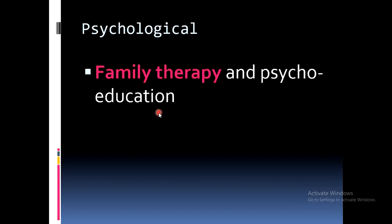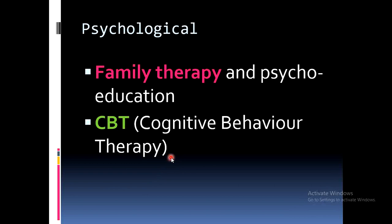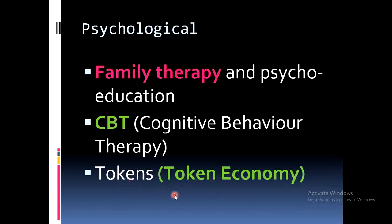Psychological interventions include family therapy and psychoeducation, cognitive behavioral therapy, and token economies. Token economy is based on operant conditioning — tokens are given to the patient when they display desired behavior, gradually filtering out abnormal behavior through this therapeutic approach.